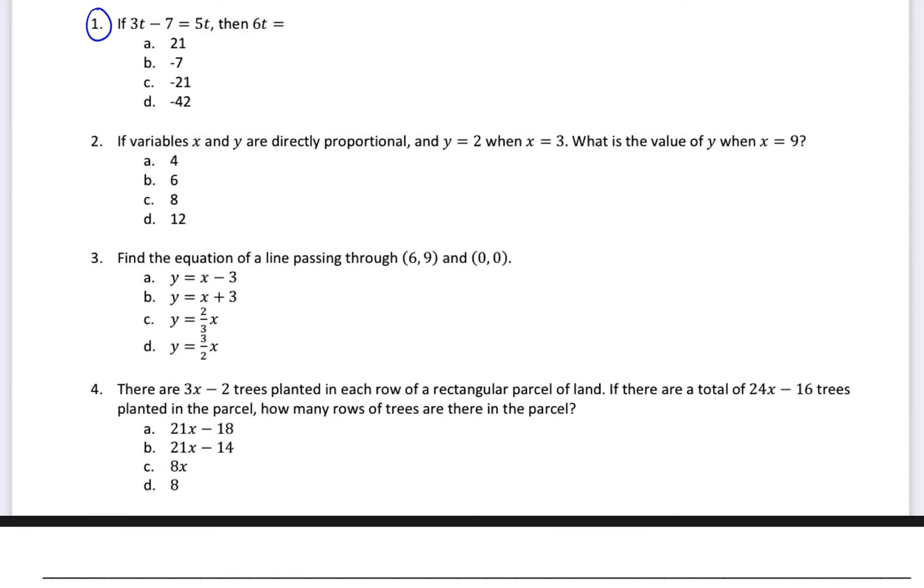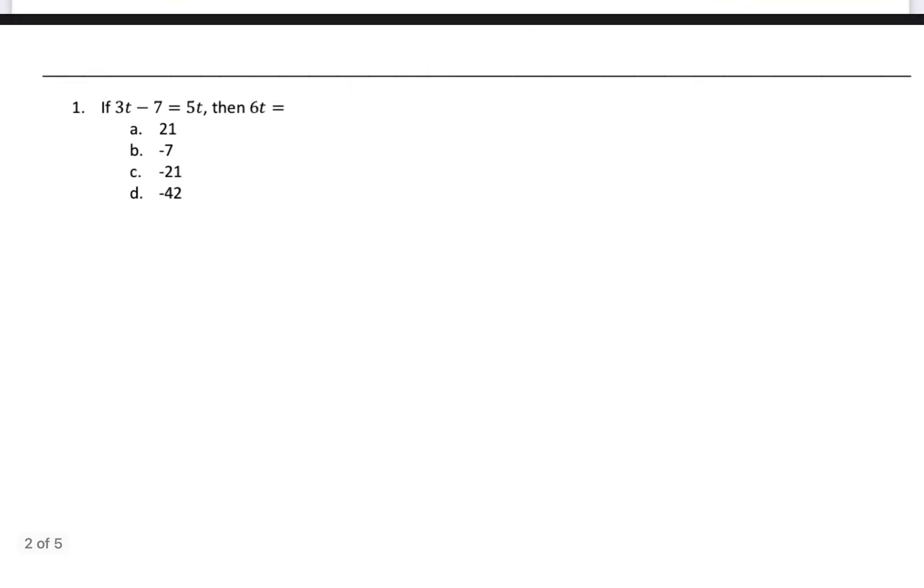It says if 3t minus 7 equals 5t, then 6t is equal to what? So I'm going to scroll down here where I have it written out separately. And so it's 3t minus 7 equals 5t. My goal is first to figure out what t is equal to.